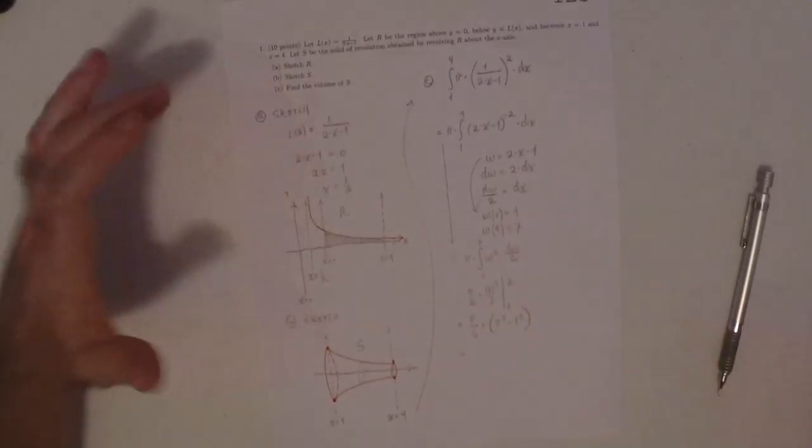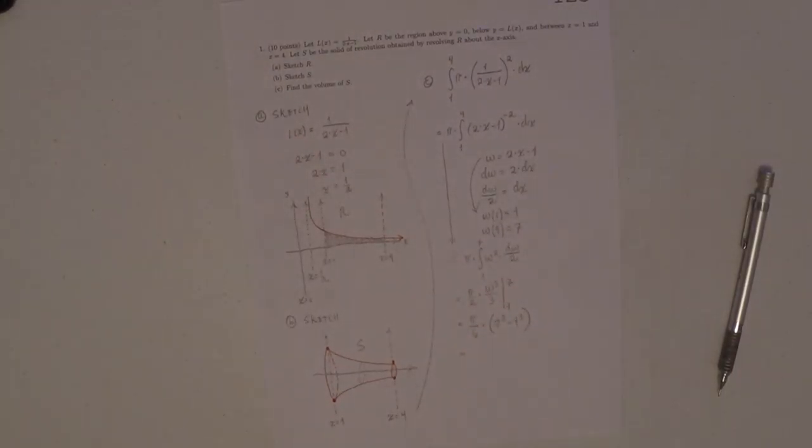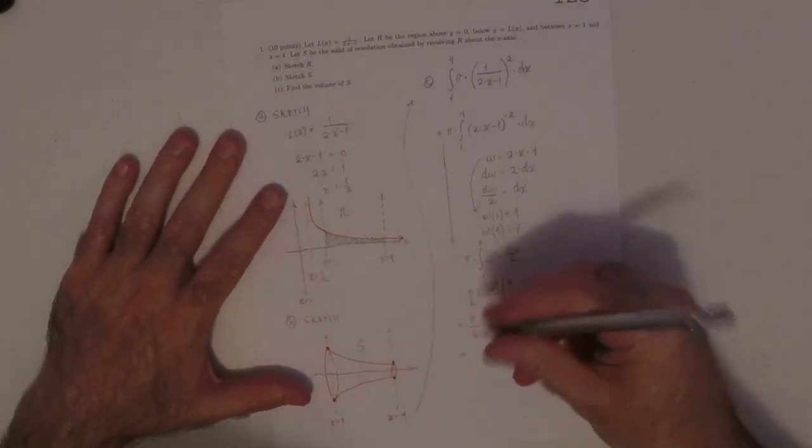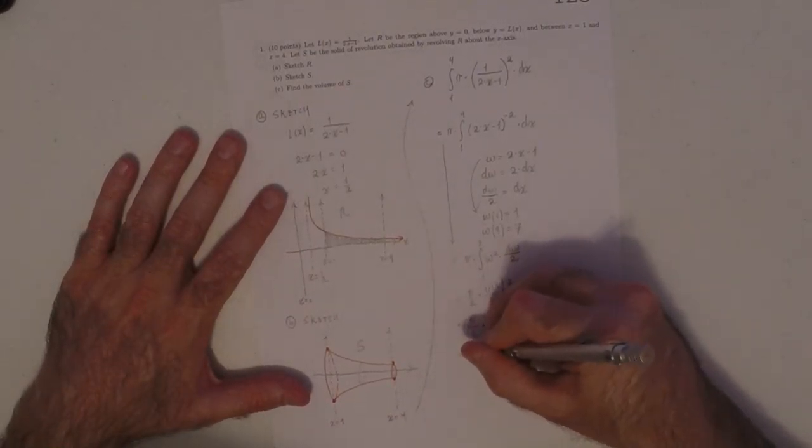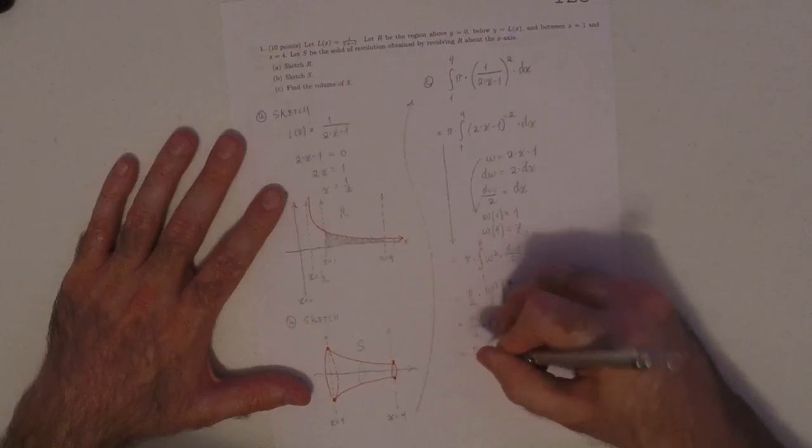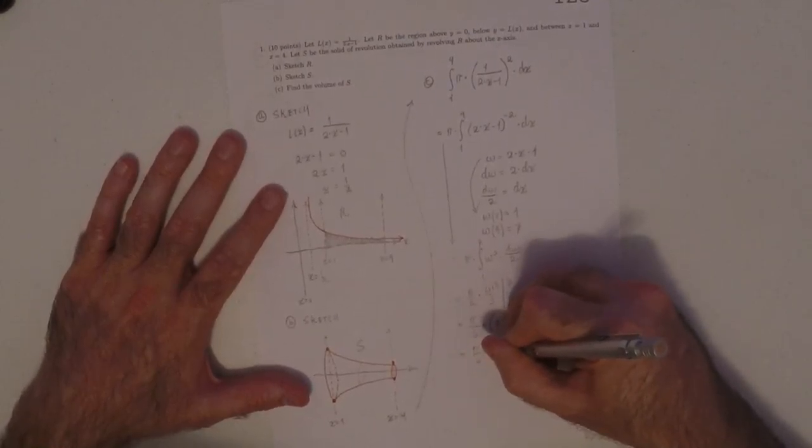And, I don't have the cube of 7 memorized. So that'd be 343, and then minus 1 would be 342. So pi over 6 times 342.